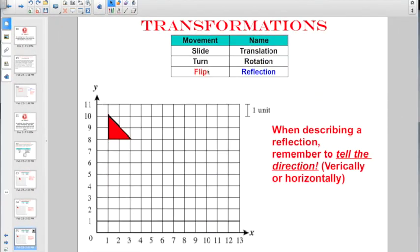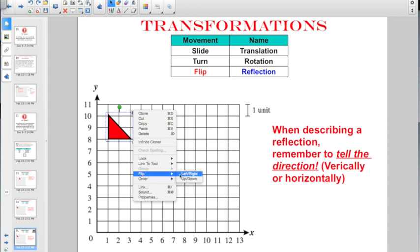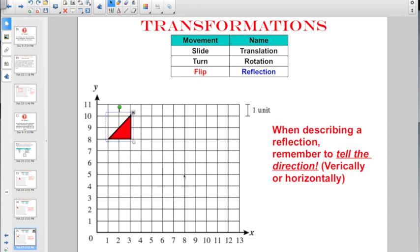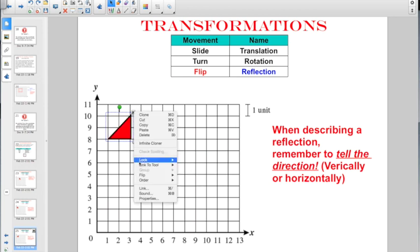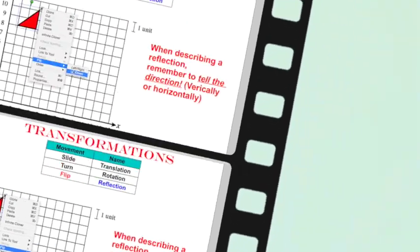And the last one up for transformations, the movement is described as a flip, but his real name is reflection. The big thing to remember when you're describing a reflection, you've got to tell what direction you're flipping it. Are you going to flip it left to right? Or are you going to reflect it or flip it up and down?